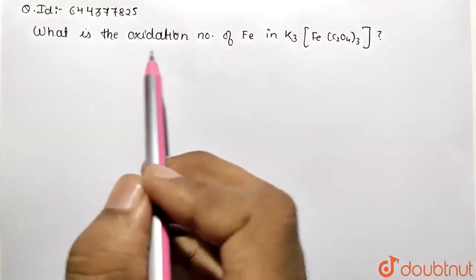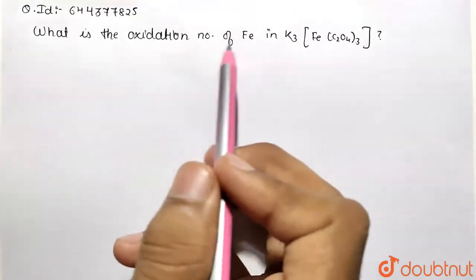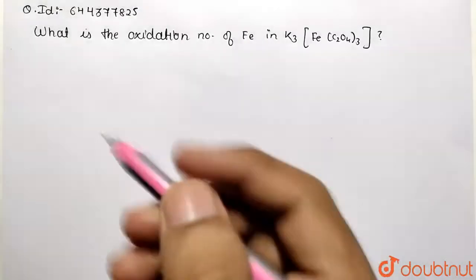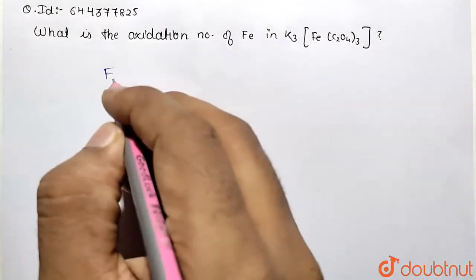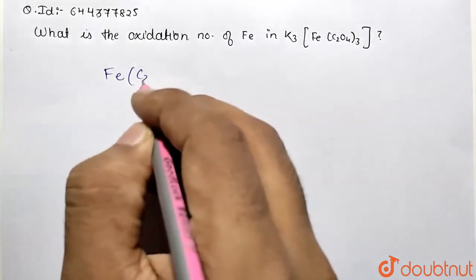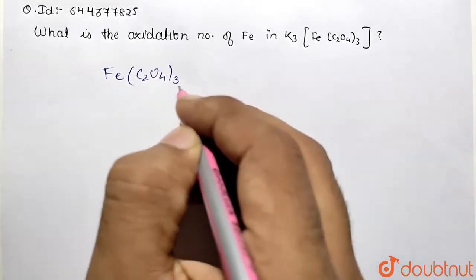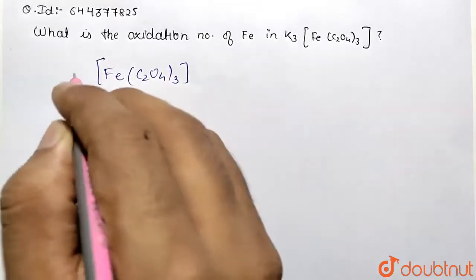need to do a basic calculation of the oxidation number of iron in this given complex. So let's first write this complex. We are given Fe, then oxalate ligand C₂O₄ is given thrice, and this is all involved